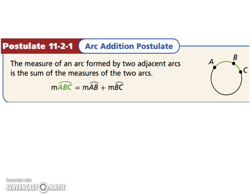The arc addition postulate. The measure of an arc formed by two adjacent arcs is the sum of the measure of their two arcs. So if you add arc AB and BC together, well, it's going to give you ABC. So the two little pieces equals the big one.